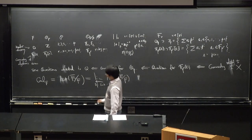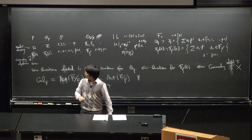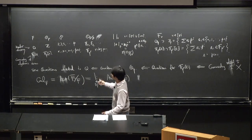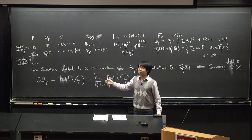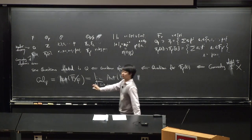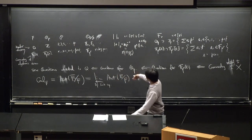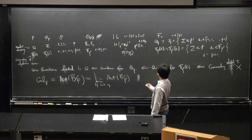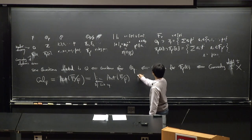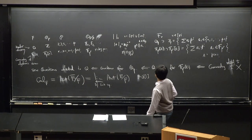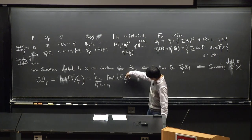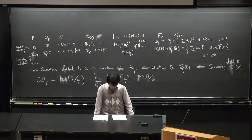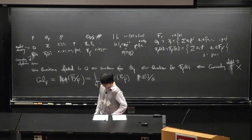The Galois group of either ℚ or 𝔽_p(x) is very hard to understand in general. For example, it's really hard to write down a single element. If you just consider the simplest case, like E = ℚ(i) over ℚ, you can easily find an automorphism sending i to −i, but when you pass to the inverse limit, you don't know what to write down as a single element.